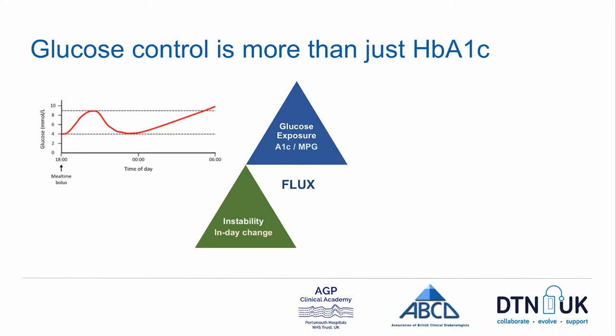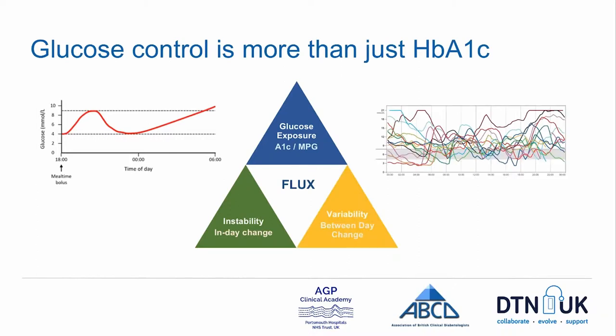The first category is glucose flux that happens within an individual day, which we tend to term glucose instability. In the graph on the left-hand side of this panel, we can see this individual has a very significantly rising glucose level after his evening meal which then creeps up over the course of the night. By contrast, the other form of glucose flux is the flux that happens between days — if the pattern of an individual day is repeated but with a different form of instability each day, it can produce a much larger profile. It's this variability between days that causes so many problems from a clinical perspective, and I would go further to say that these flux measures are actually the sole target and treatment requirement to avoid hypoglycemia.